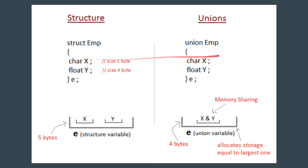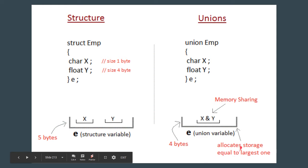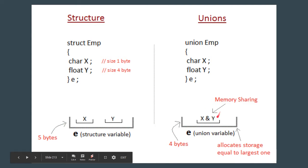In case of unions, if we have union EMP with the same two member variables x and y, the total memory provided to the union will be different from the structure. The size of char is one byte and float is four bytes, so the larger size is four. Therefore the entire size of the union will be four bytes — equal to the largest member. This is known as memory sharing.